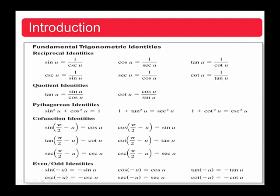Now, these are the very important identities we've learned so far. The first one is the reciprocal identities. Sine and cosecant are reciprocals, so sine u equals one over cosecant u. Cosine and secant are reciprocals, so cosine u equals one over secant u. Tangent and cotangent are reciprocals, so tangent u equals one over cotangent u. You can reverse the order to get the other three sets.